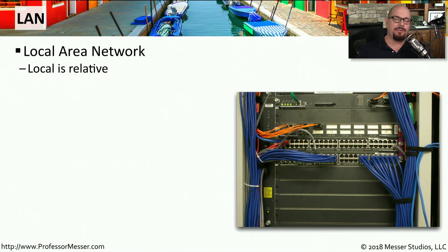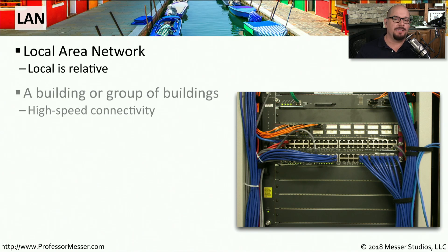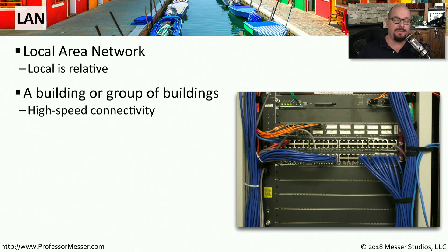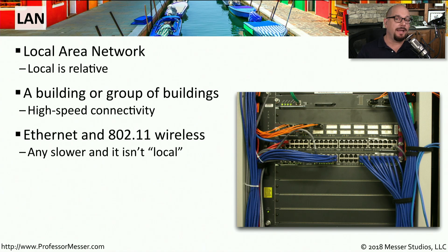If you're connecting devices together in your immediate geography, then you're probably using a local area network, or a LAN. A LAN is usually connecting devices in the same room or perhaps on the same campus. There may be a number of different buildings that are close by, and you're able to connect them over higher speed ethernet connectivity. This gigabit and even 802.11 wireless connectivity could be considered a local area network. Once you go to slower speeds than this, you're probably not connecting to anywhere that's in your local area.